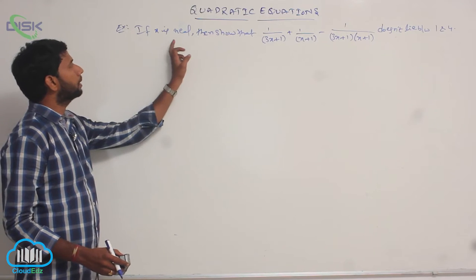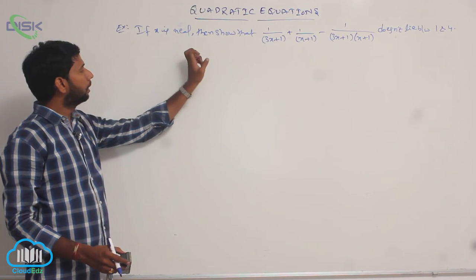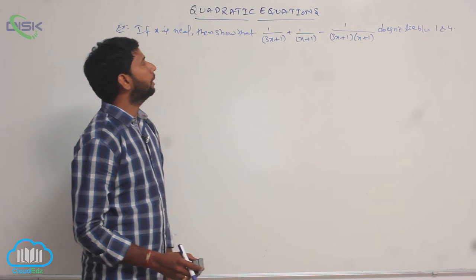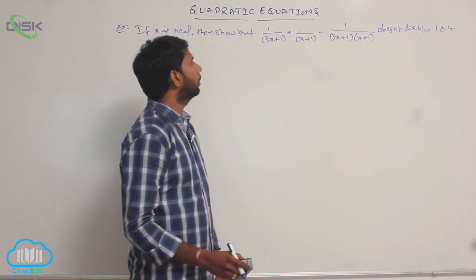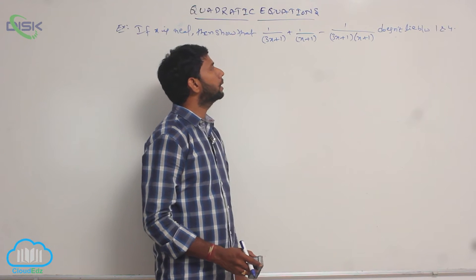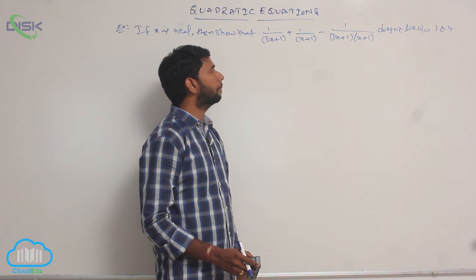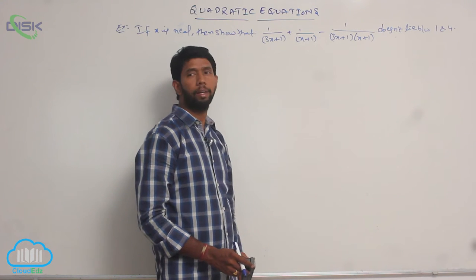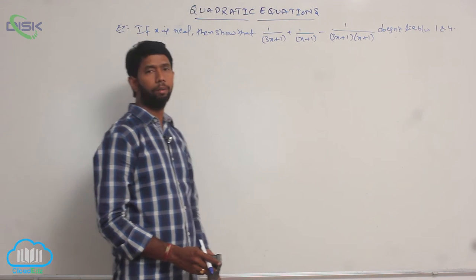Let's go to another example. If x is real, then show that 1/(3x+1) + 1/(x+1) - 1/((3x+1)(x+1)) does not lie between 1 and 4.